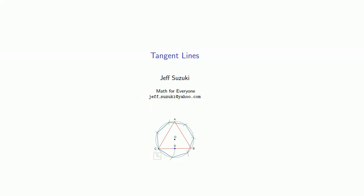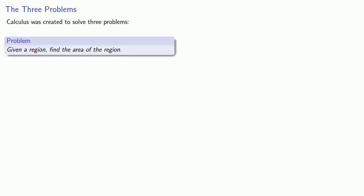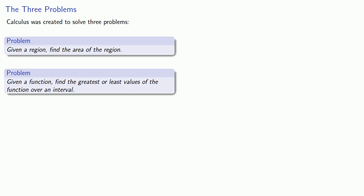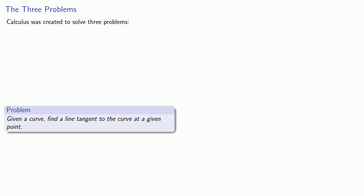So why go through all this trouble of inventing calculus? Historically, calculus was created to solve three problems: given a region, find its area; given a function, find its greatest or least values over an interval; and given a curve, find a line tangent to the curve at a given point. The first problem was actually the easiest and was solved first, but for a variety of reasons we begin by trying to solve the third problem.